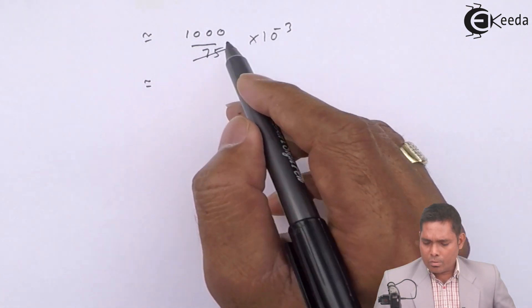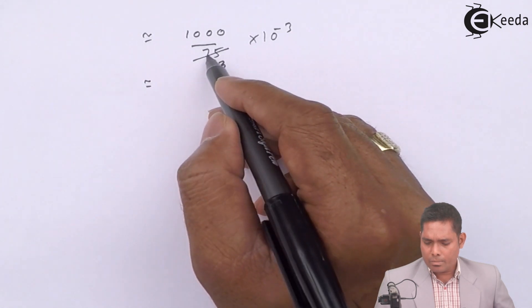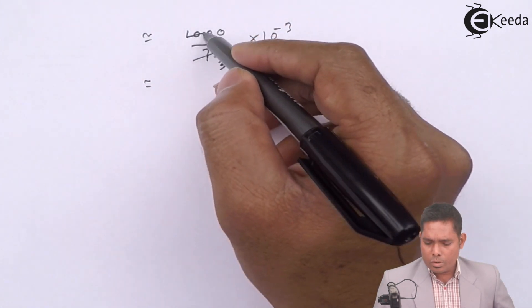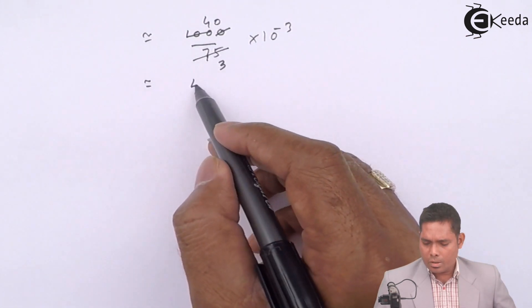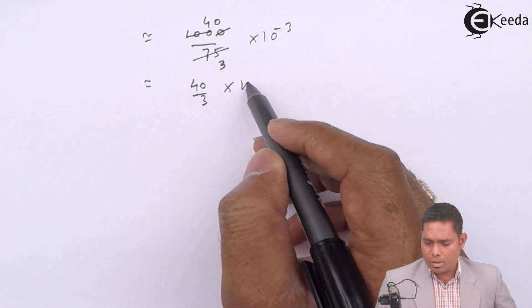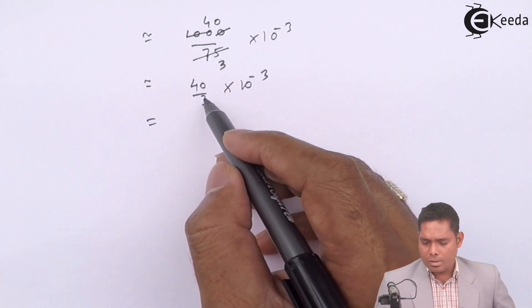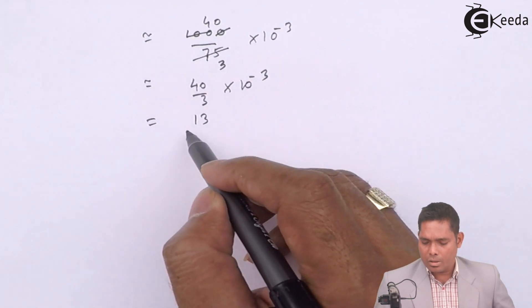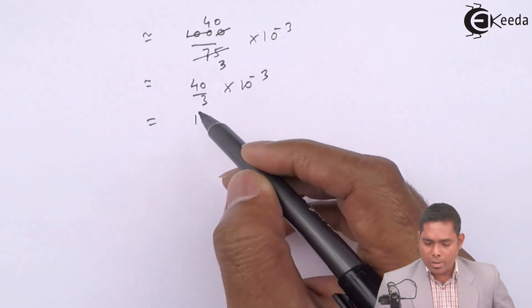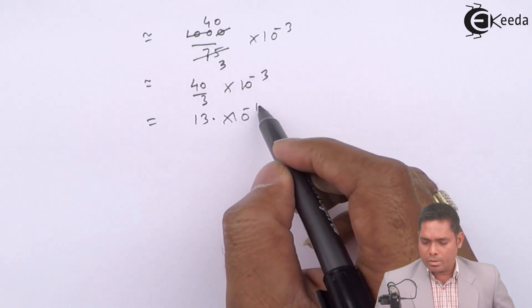This is 1000 divided by 75 into 10⁻³. Let us see by this way how far close we are to the exact answer. If I divide by 25, then it is 25, 3 is 75. Then 25 times 4 is 100, so it is 40. So it is 40 divided by 3 into 10⁻³. This is easier to calculate. And obviously, it is around 13 point something into 10⁻³.